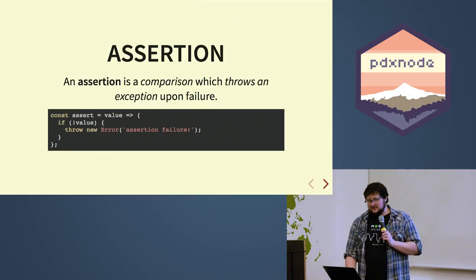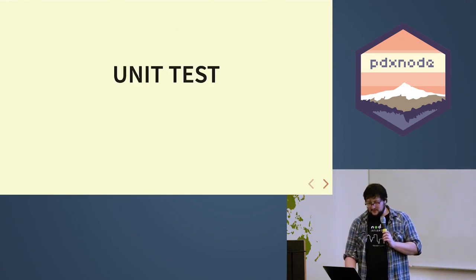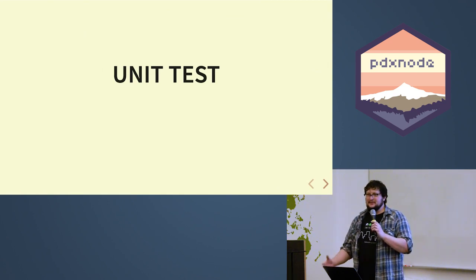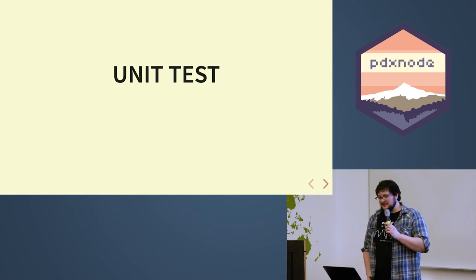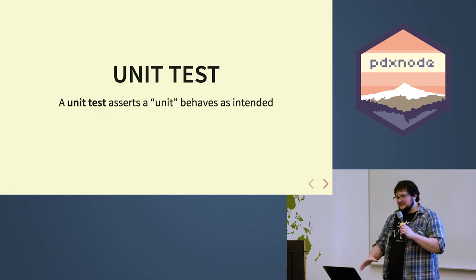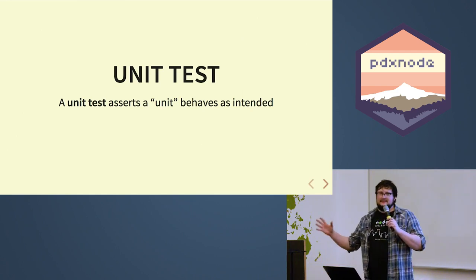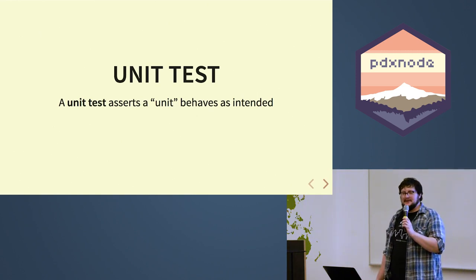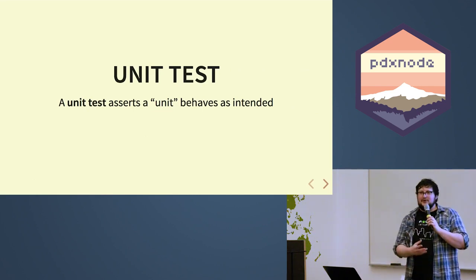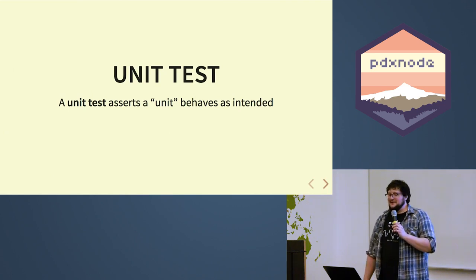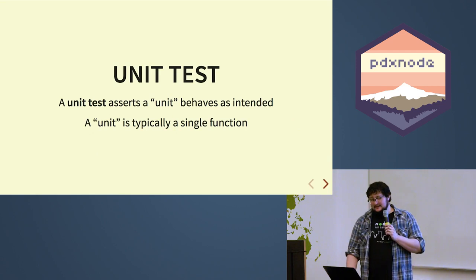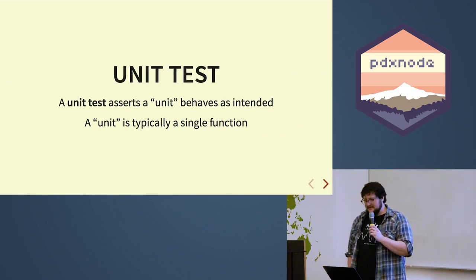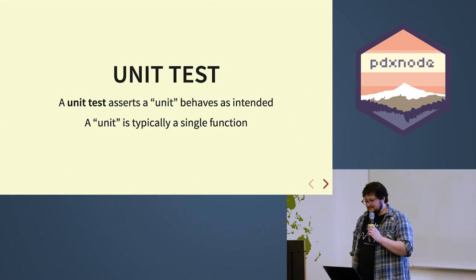The next term is the unit test. A unit test asserts that a unit behaves as intended. A unit is the smallest testable chunk of code — generally that's going to be a function, because you can't easily pull a little bit out of a function and test just that piece. So we're talking about functions most of the time, but not always. You can have a unit test that's testing events, for example, where it's not a function itself you're testing per se.